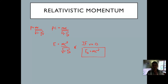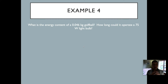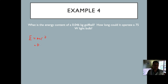E equals mc² is the energy of an object at rest — how much energy we can get out of the mass of an object. Now let's look at Example 4. It asks: what is the energy content of a 0.046 kilogram golf ball? So E is our unknown. E equals mass times the speed of light squared.